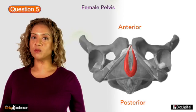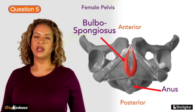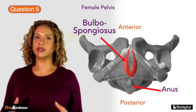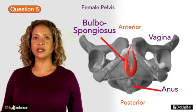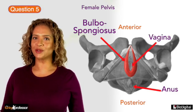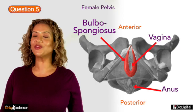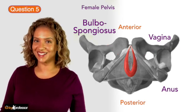In females, the two muscles are quite separate from each other and run anteriorly on either side of the vagina, attaching to the corpora cavernosa of the clitoris.